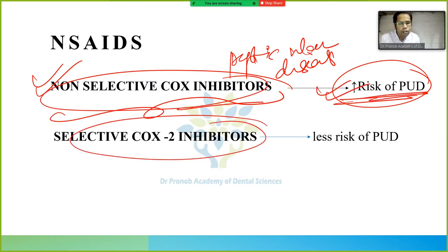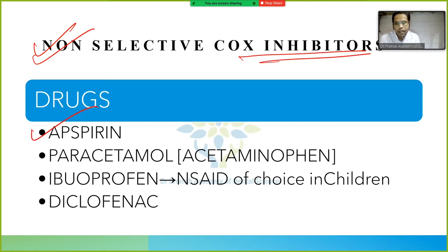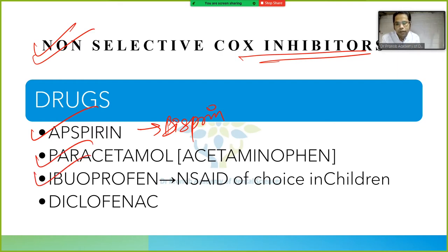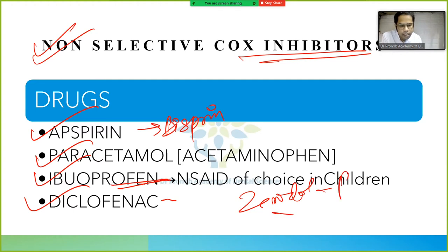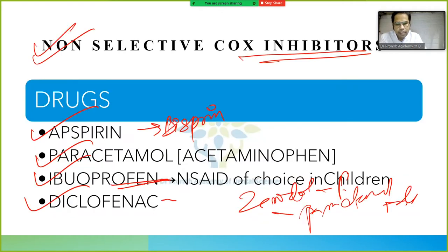The non-selective COX inhibitors include: aspirin, paracetamol, ibuprofen, diclofenac, indomethacin, mefenamic acid, piroxicam, and phenylbutazone. Diclofenac is commonly prescribed; for example, Zerodol contains paracetamol plus diclofenac. There is a mnemonic to remember these drugs: DIMPY.